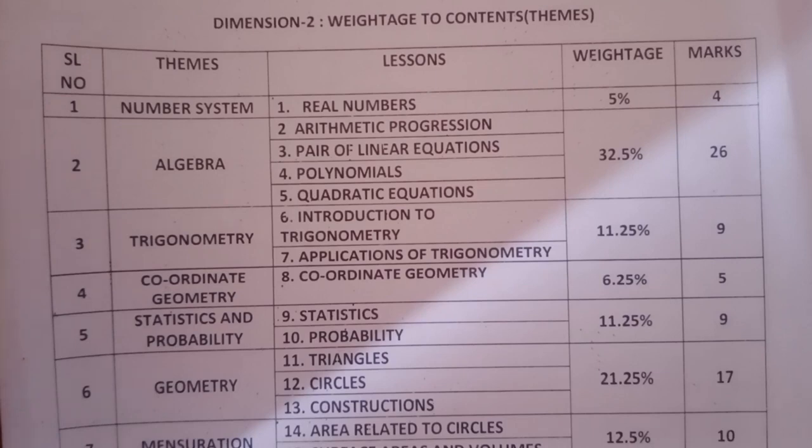Trigonometry has two lessons: introduction to trigonometry and applications of trigonometry. These two lessons carry nine marks. Coordinate geometry has five marks. Statistics and probability, these two lessons have nine marks. In geometry, we have triangles, circles, constructions - three lessons with seventeen marks. In mensuration: area related to circles and surface area and volumes, these two lessons have ten marks.